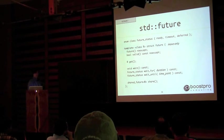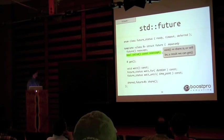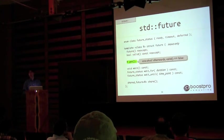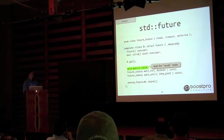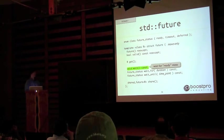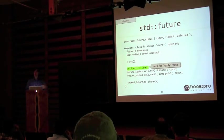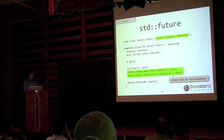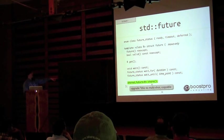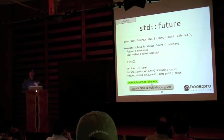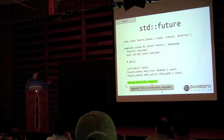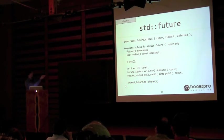Here's the declaration for future. You can ask whether a future is valid — meaning you can get a value from it. Once you call get, you can't call get again; it's a one-shot. You can wait for the future to become valid without consuming it, using wait(). We have the same pattern of wait_for and wait_until. The share() method returns a shared_future, which is multi-shot, and actually changes this future to a shared_future.